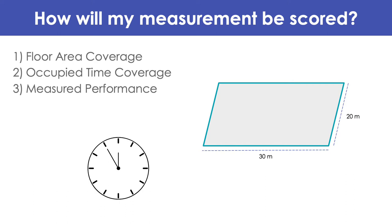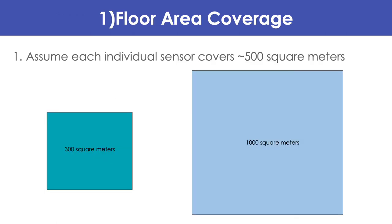For monitoring a school's CO2 levels, Arc Reentry will give you recognition based on your floor area coverage, occupied time coverage, and measured performance. Floor area coverage indicates the fraction of the school covered by all sensors. Users can assume that an individual sensor covers approximately 500 square meters based on the RESET Air standard for commercial interiors, or by following guidance from their vendor or product manufacturer. The coverage area of a single sensor should not exceed 500 meters squared.